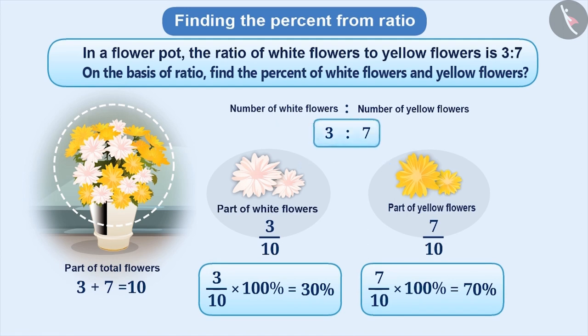Therefore, in order to find the percent from ratio, first we add the numbers expressed in ratio to find the total number of parts. Then, from the total parts, express the part of individual objects in the form of a fraction. Then, convert the obtained fraction into percentage.